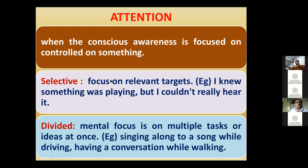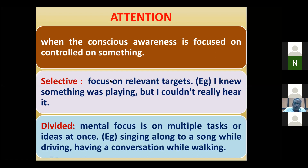Selective attention is focusing on a single thing only — for example, when concentrating on a game, you cannot attend to other things. Divided attention is performing multiple tasks simultaneously — for instance, working on a laptop while listening to music, or a mother cooking while singing. These illustrate the divided variety where two or more tasks are performed at the same time.